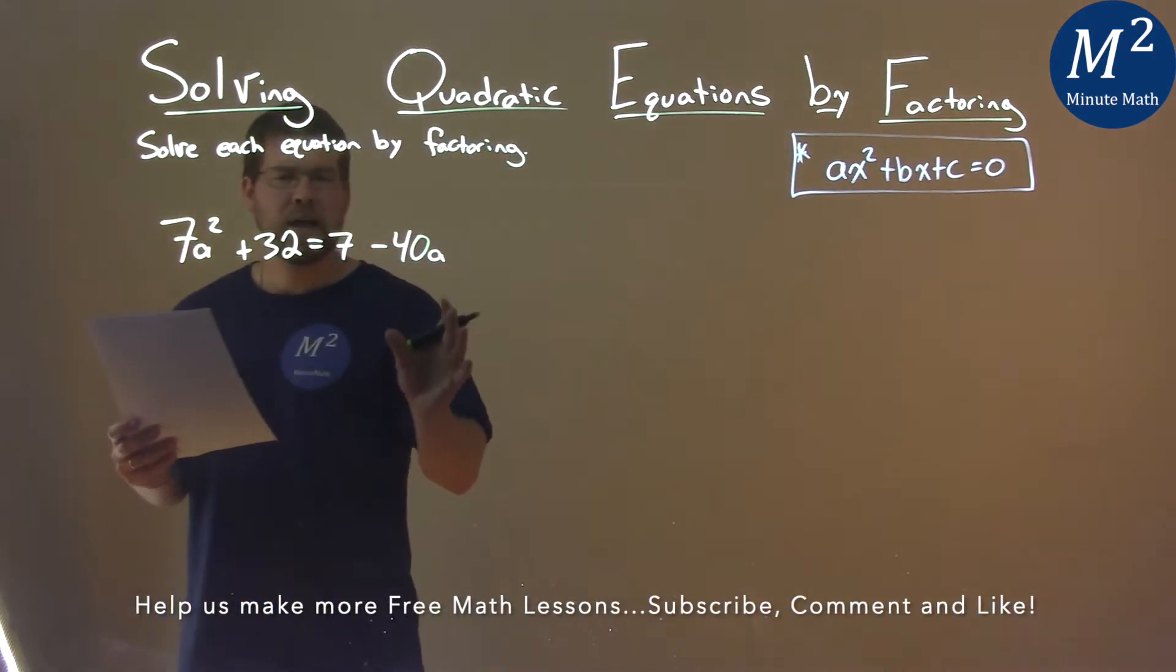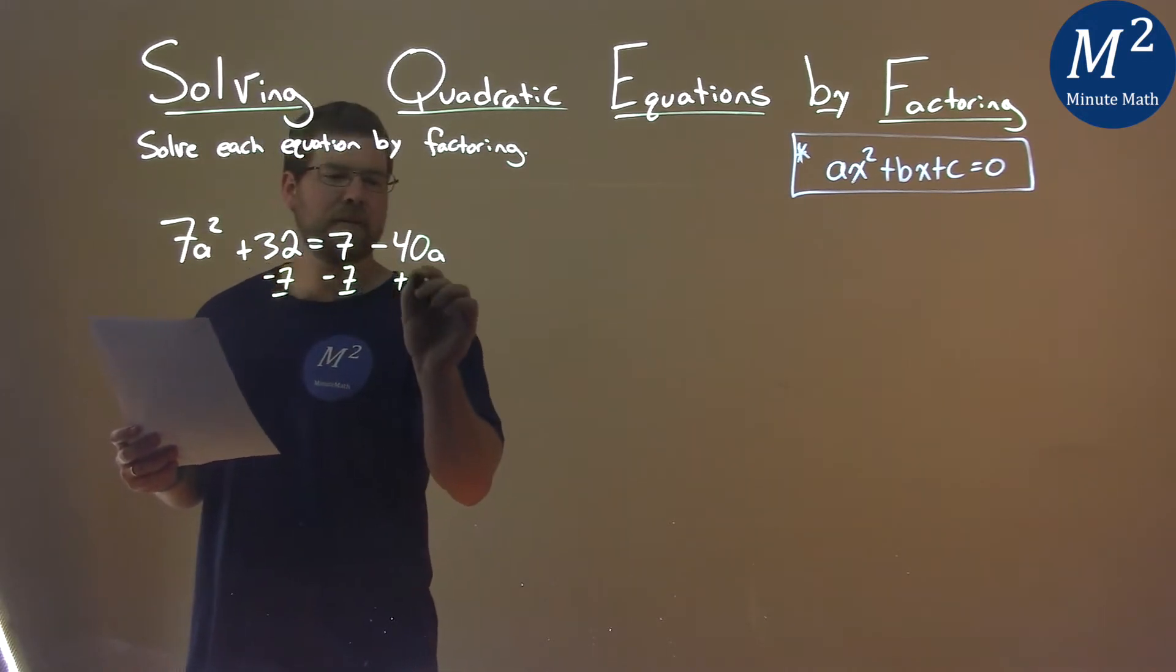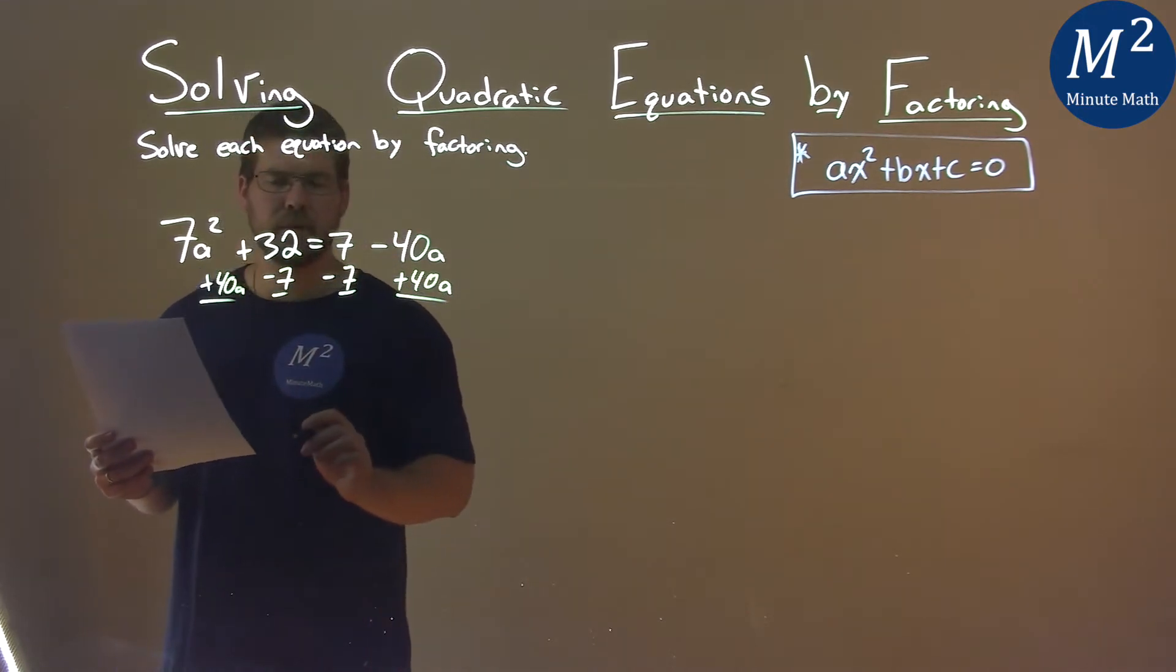I want to bring everything together to the left-hand side. So I'm going to subtract 7 from both sides and add 40a to both sides. What happens there?